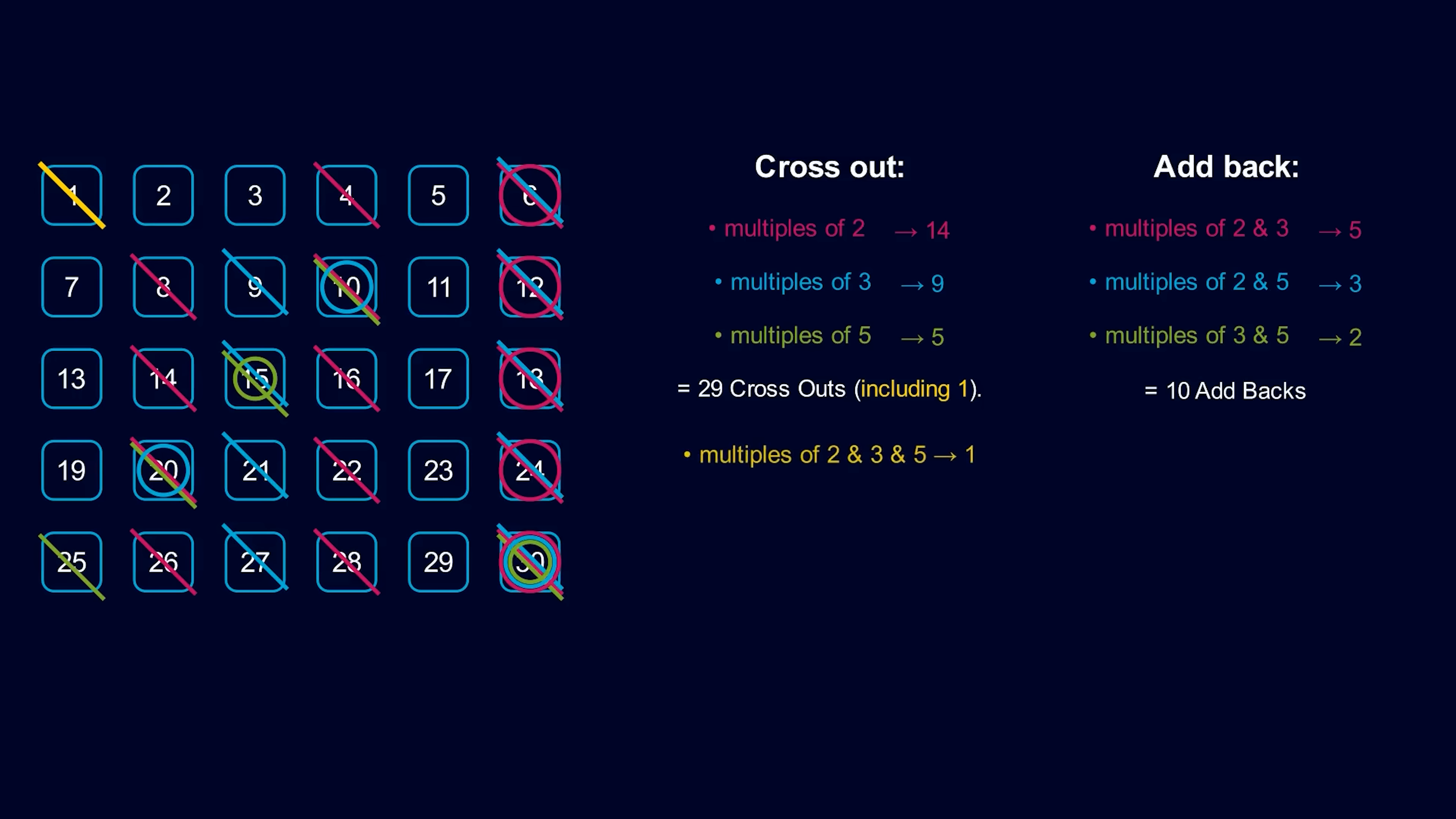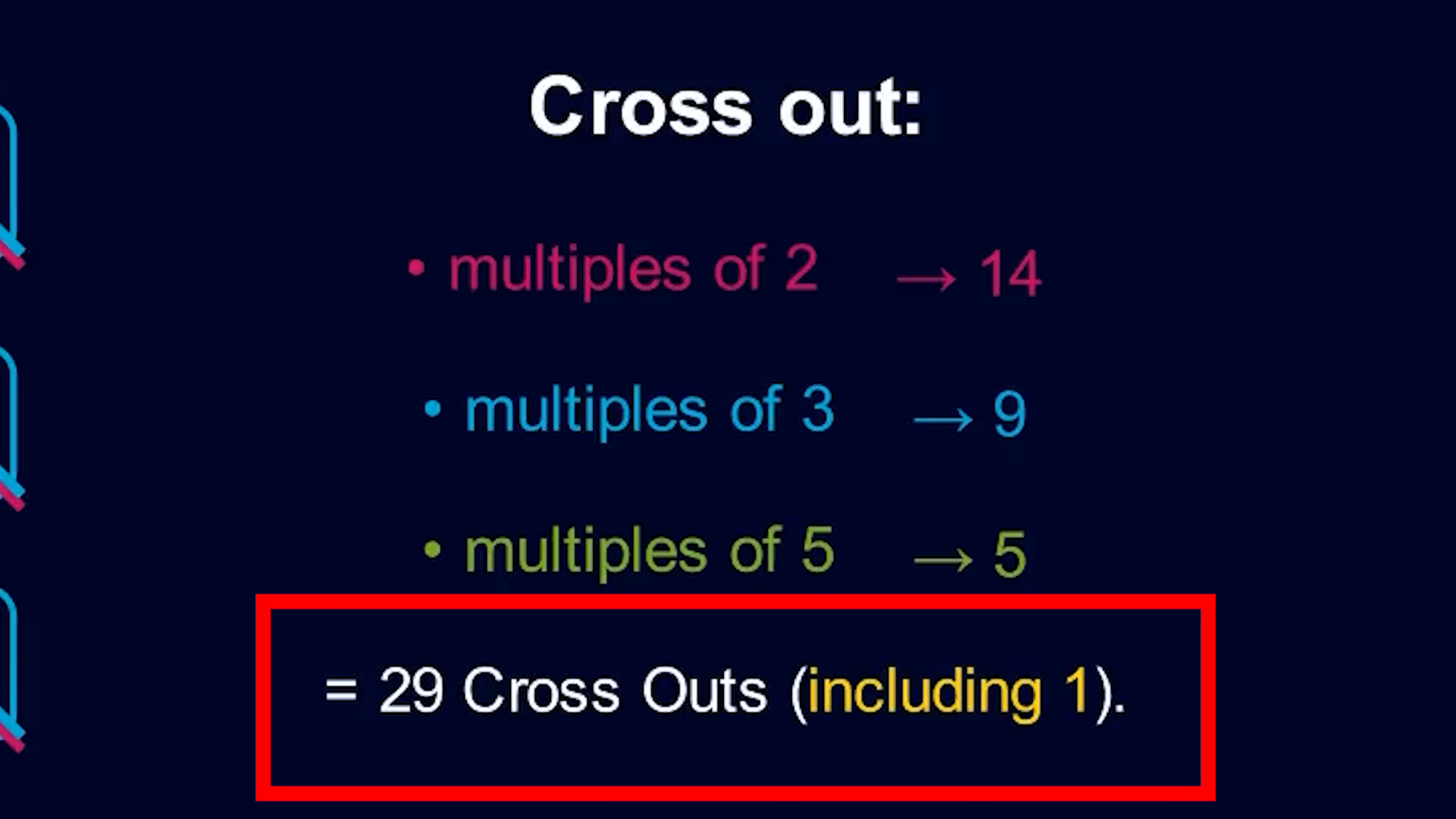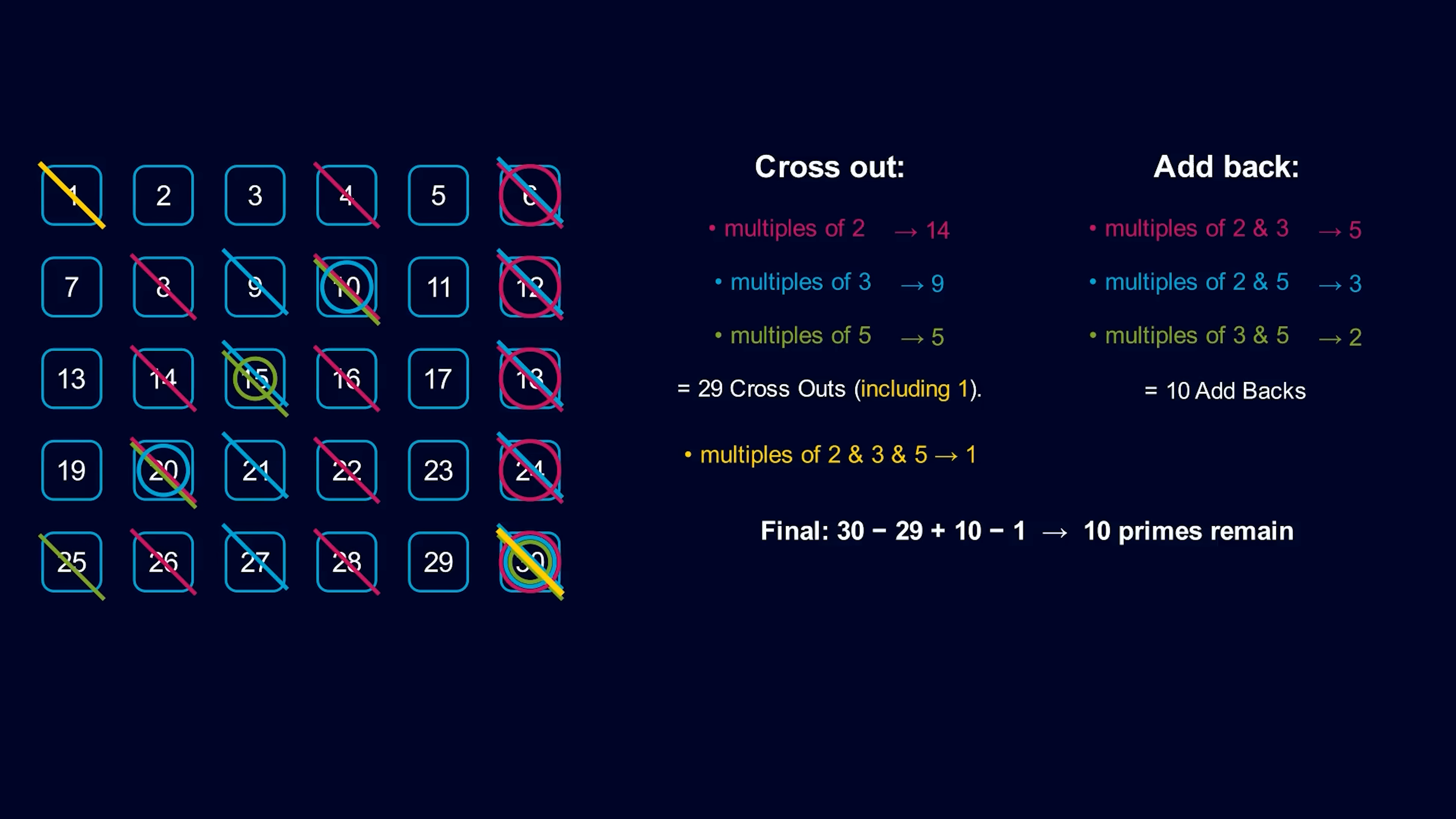Now we're almost done. We've still over-counted the numbers that are multiples of 3 primes. There's only one such number, 30. In all, we've removed 29 multiples of 1 prime, we've added 10 multiples of 2 primes, and we removed the number 30, which is a multiple of all 3 primes. After this, 10 numbers remain.